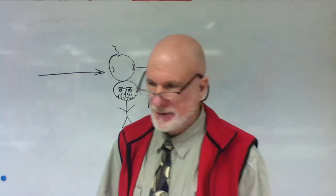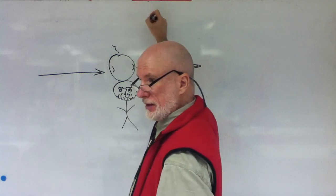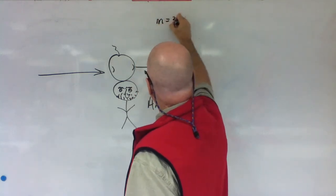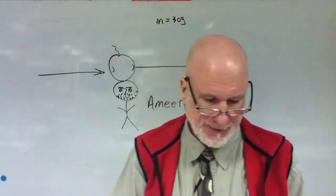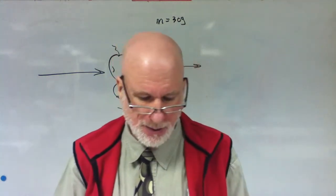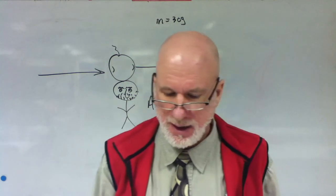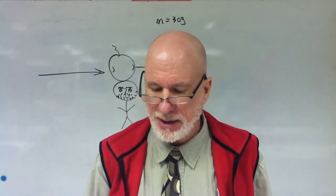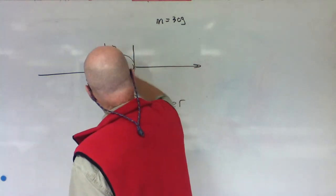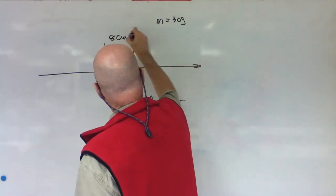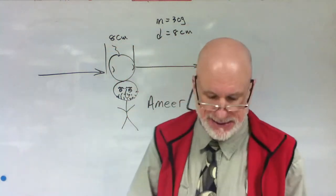So it says he has a 30 gram arrow. The mass is 30 grams. A 30 gram arrow is shot by William Tell, shot by Mr. Amir. Okay. So this is an apple, so this is eight centimeters thick. Eight centimeters, that's a distance, right?